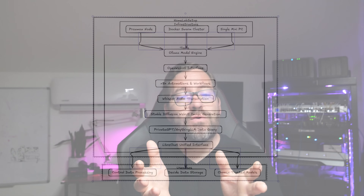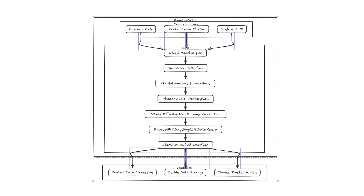So how do all these tools fit together in your Homelab? I like to think of it like this: Ollama is the central model engine, and once you have it running, many of the other tools just plug in and start working. OpenWebUI is the interface that interacts with it. N8N handles automations and workflows. Whisper transcribes audio. Stable Diffusion Web UI generates images. PrivateGPT or AnythingLLM can query your own data. LibreChat offers another unified interface to access everything. You can run all of this on a Proxmox node, inside a Docker Swarm cluster, or even a single mini PC. The real benefit is control — you decide what data gets processed, how it's stored, and what models you trust.